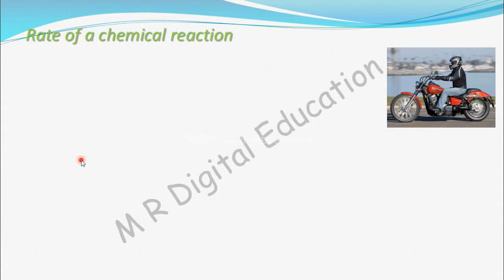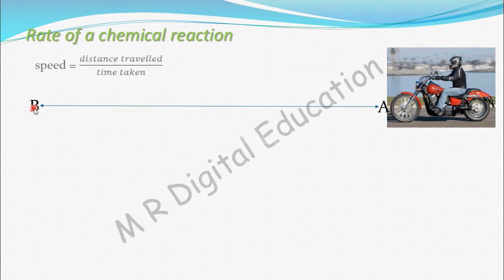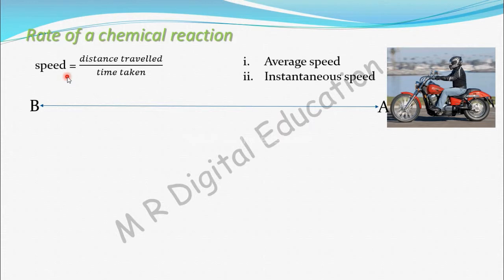Suppose you are traveling on a bike between A and B, and you take some time. How do you find the speed? Speed equals distance traveled divided by time taken. You calculate the distance between the two points and divide by the time taken to travel that distance. There are two types of speed: average speed and instantaneous speed.